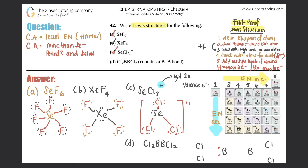One, two, three for each boron, then seven for each chlorine. Now make all the single bonds: one electron to one electron - like that, like that, that, and like that, forming bonds between each chlorine and its boron, and between the two borons.